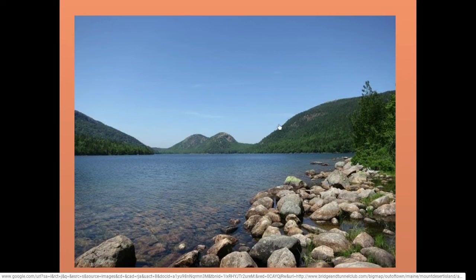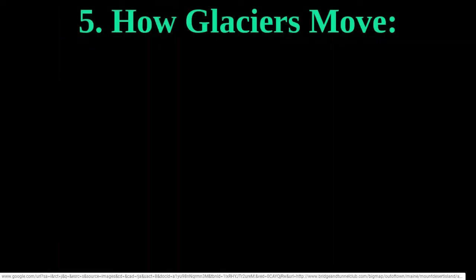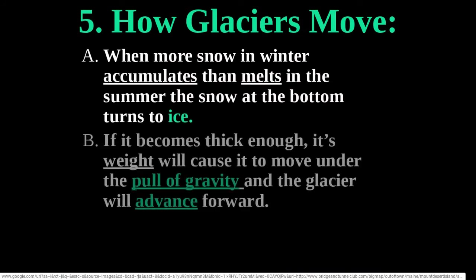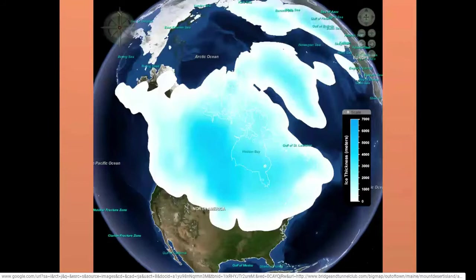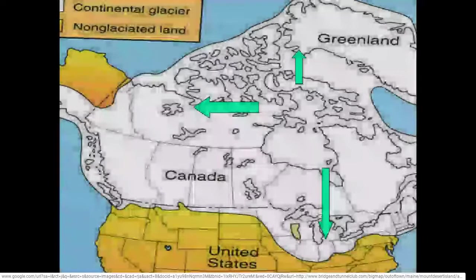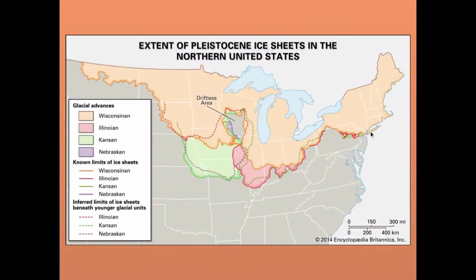Glaciers move when more snow accumulates than melts — the bottom layers come under so much pressure they begin to turn to ice. Once thick enough, gravity pulls that ice down gradient toward lower elevations. When the climate warms, the ice melts and the glacier retreats. During the last ice age, continental ice sheets built up and collapsed outward in all directions — you can see the arrows showing how the ice moved, covering Long Island under the Wisconsin Glacier.